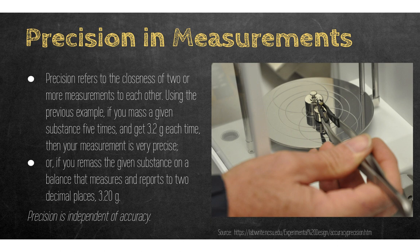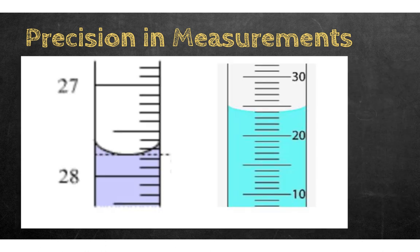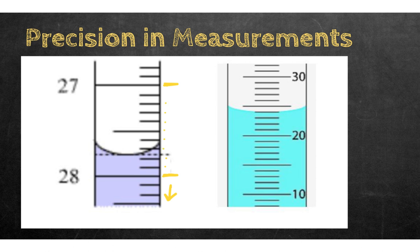Precision is independent of accuracy. The precision of an instrument is determined by its intervals. Looking at a burette on the left: burettes dispense liquid from the bottom rather than the top. Between the values 28 and 27, counting 10 intervals means each interval equals 0.1, so readings would be 27.1, 27.2, and so on.